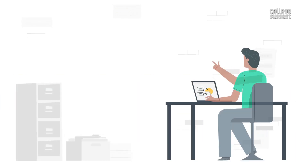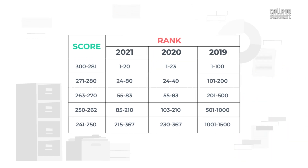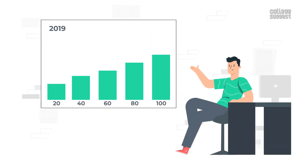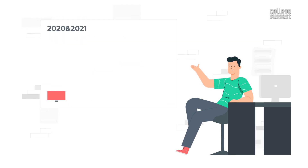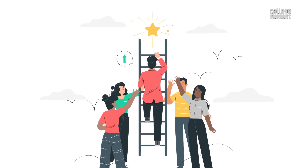Just to show a comparison, we have compiled a table showing the ranks for the past three years — 2021, 2020 and 2019. From the table, it is clear that there is a gradual shift in the ranks obtained for the same range of scores. In 2019, if you scored the highest marks, you would be within 100 ranks. But in 2020 and 2021, if you scored the highest marks, you would be within a rank of 1 to 25 approximately. This shows that the competition is increasing.